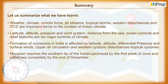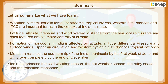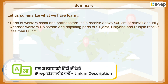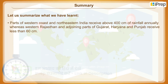Monsoon reaches the southern tip of the Indian peninsula by the first week of June and withdraws completely by the end of December. India experiences the cold weather season, the hot weather season, the rainy season and the transition monsoons.